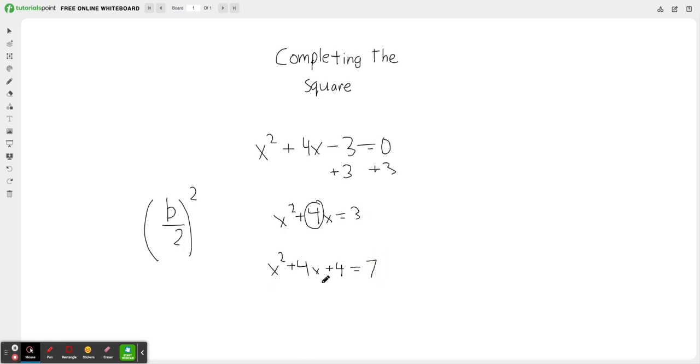And as you can observe from this left side of the equation, the x squared plus 4x plus 4, this can be simplified down to x plus 2 whole squared. And that equals 7.